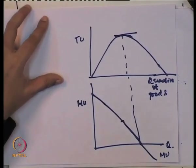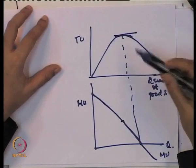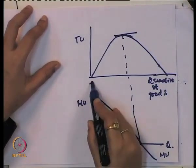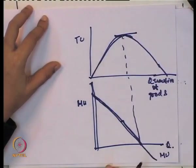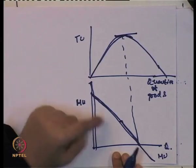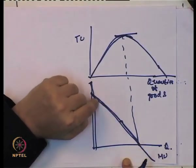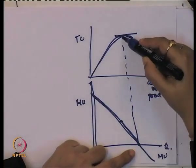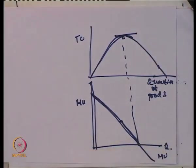How are total utility and marginal utility related? Initially total utility increases at a decreasing rate, reaches the maximum, then decreases. Marginal utility, being the slope of total utility, decreases while total utility is increasing at a decreasing rate. When total utility is at maximum, marginal utility is zero. When total utility is decreasing, marginal utility becomes negative.